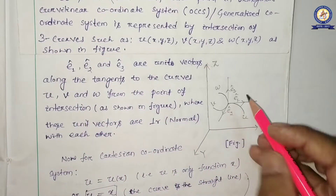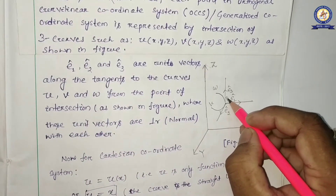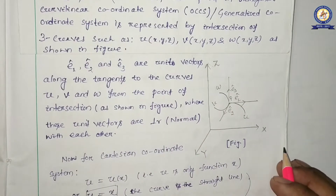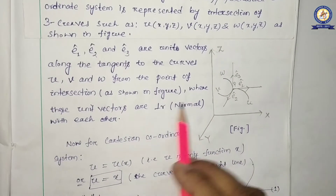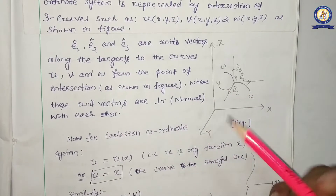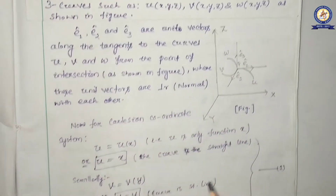The corresponding unit vectors along the tangent are: for u, e1 cap; for v, e2 cap; for w, e3 cap — unit vectors along the tangent to the curves u, v, w from the point of intersection, named point P. These unit vectors are perpendicular to each other, hence it is called an orthogonal coordinate system.